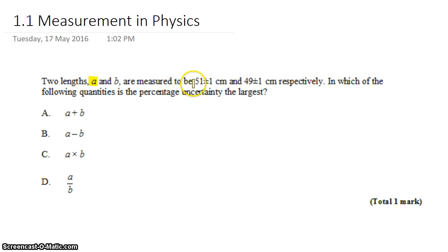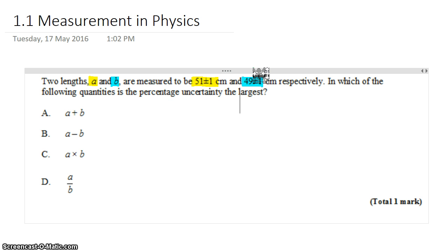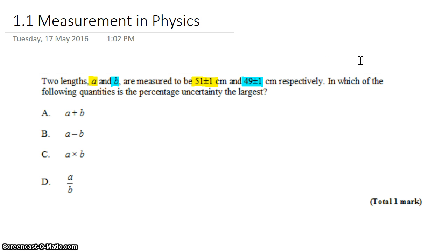So A is 51 and B is 49. The plus or minus means that while we think the length of A is about 51 centimeters, based on our estimate of the uncertainty, it could be as high as 52 or as low as 50. Similarly, B could be as high as 50 or as low as 48 centimeters — so plus or minus 1 centimeter.